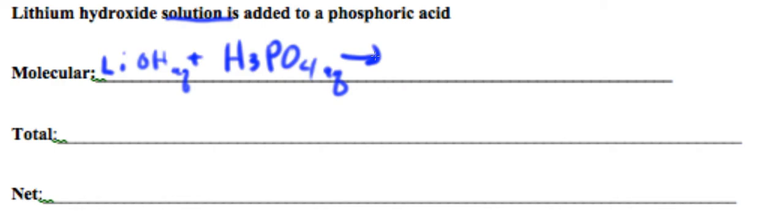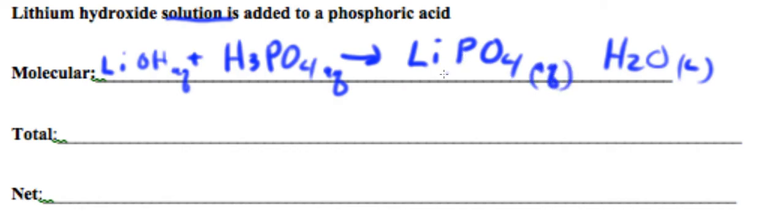Well, I have an acid and a base, so you know you're going to get water liquid and a salt. That salt is going to be lithium phosphate, Li3PO4. Now the charge on phosphate is minus three.